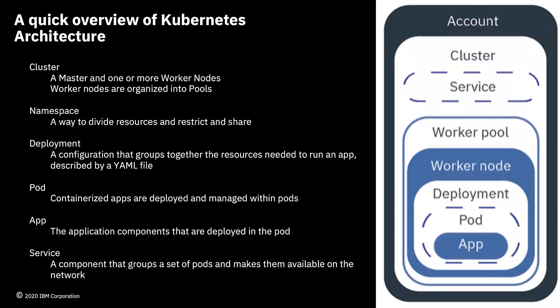Next we have namespaces. A namespace is basically a way to divide resources so that you can then grant access to them as administrators. Another way to think about a namespace is as a project. So let's assume you have three projects — Project A, Project B, and Project C. You can create a namespace for each project, then grant access to Project A to developer one so they can do everything they need on Project A yet have no access to the resources of Project B or Project C. That's basically what a namespace is and how it's used.